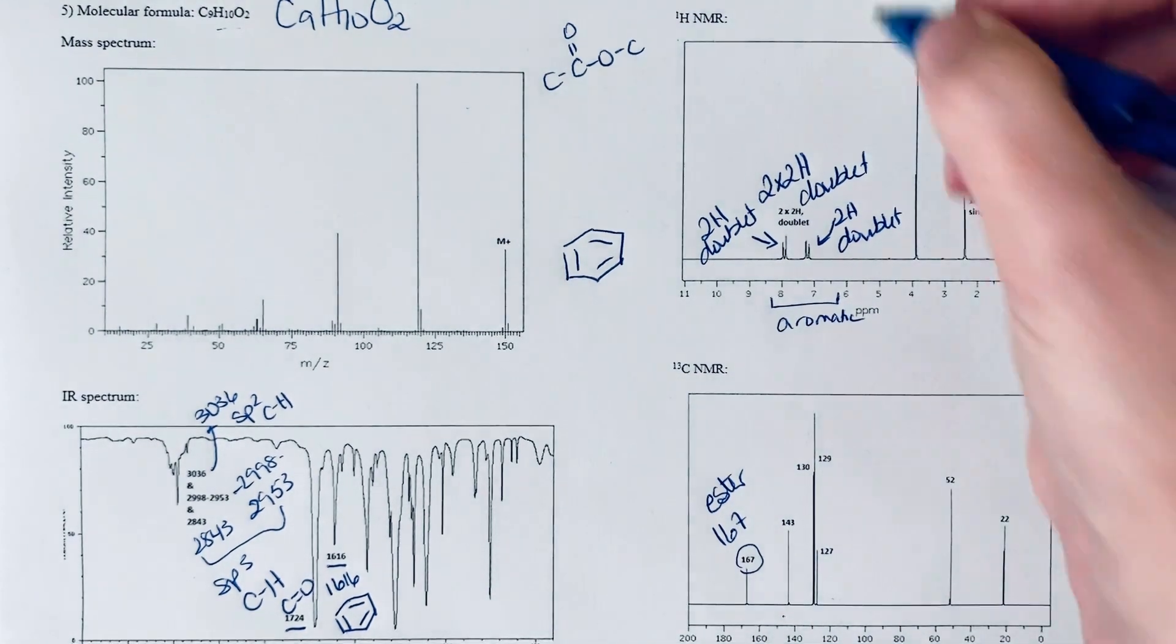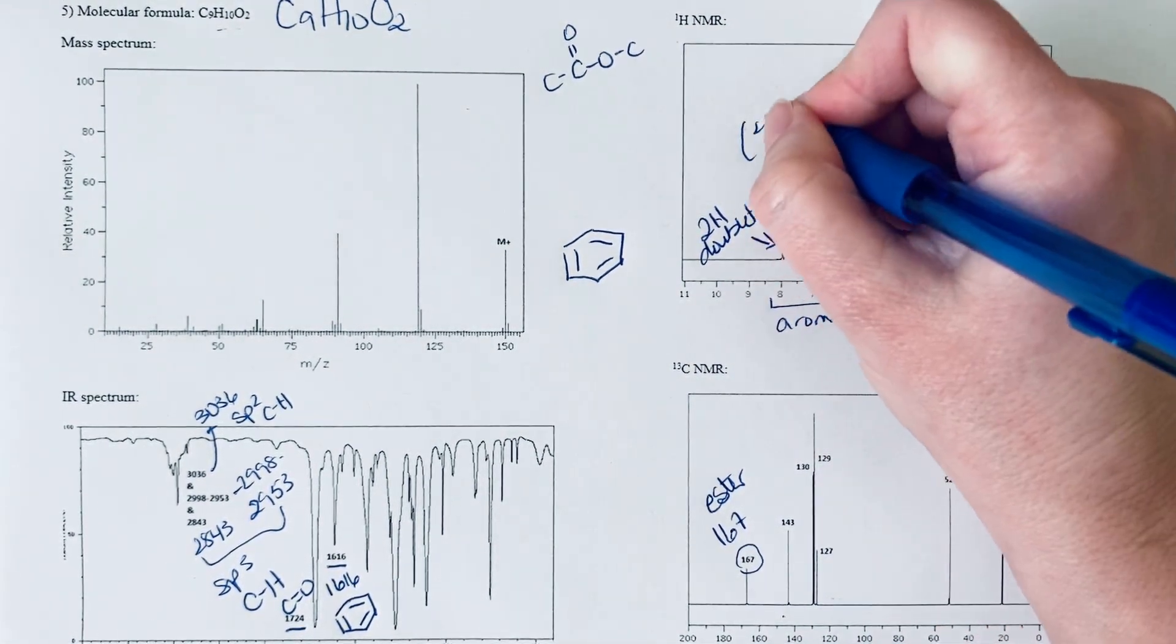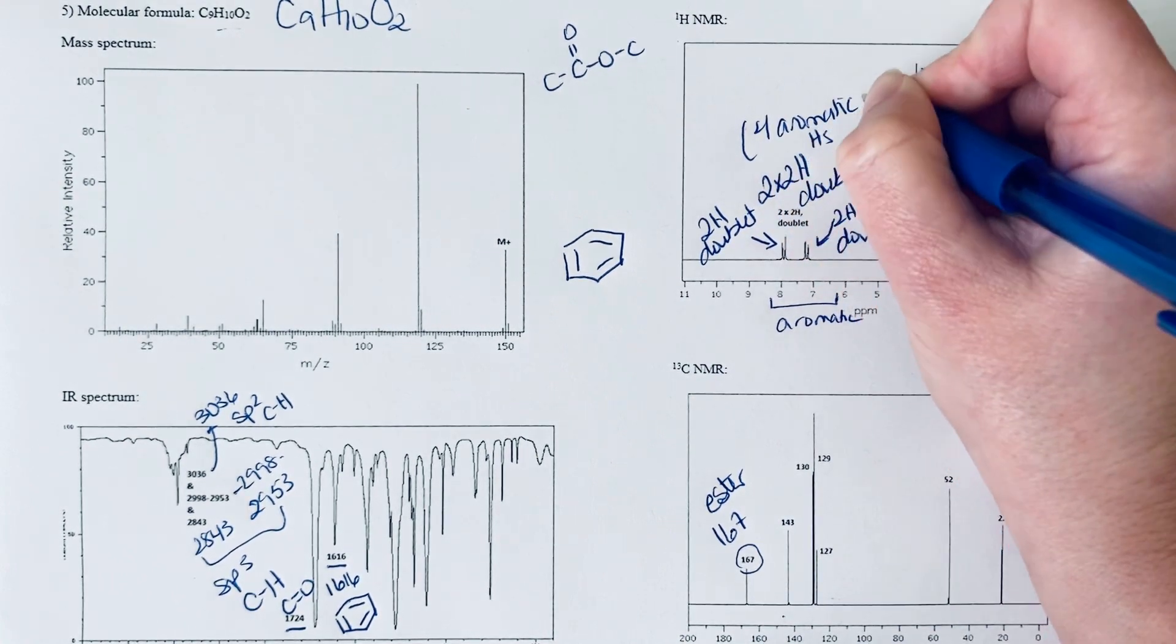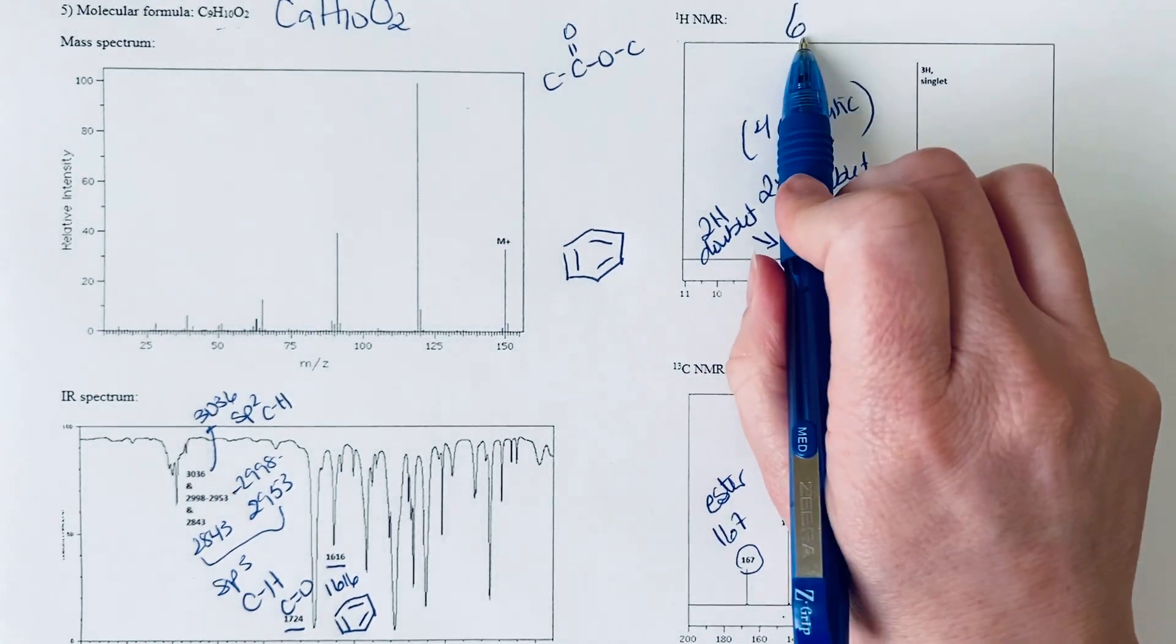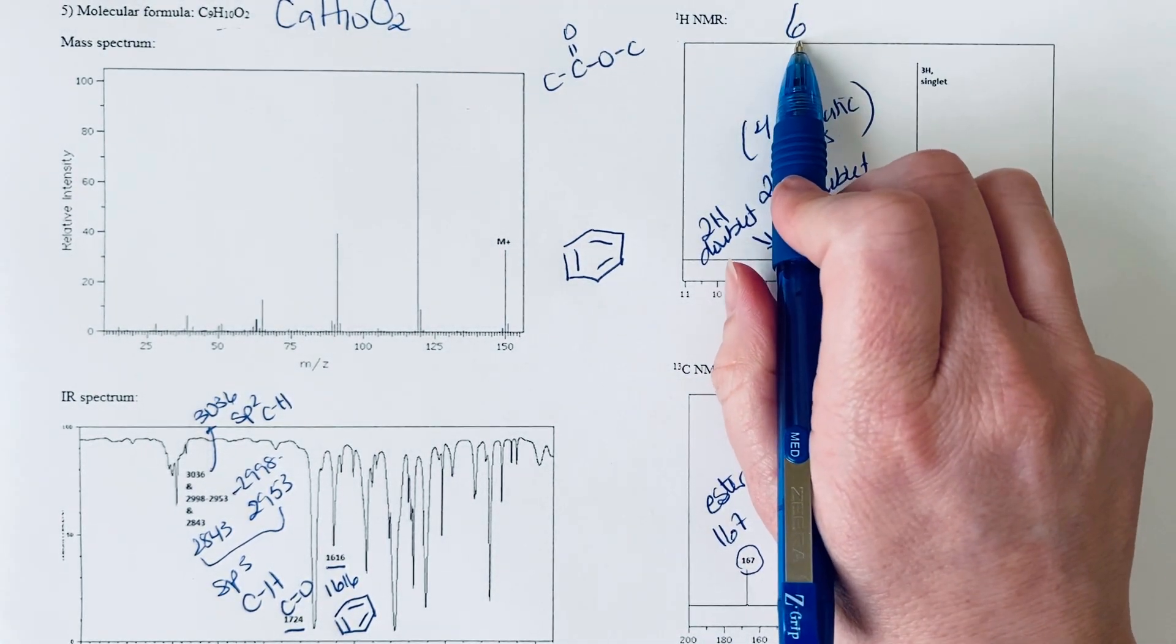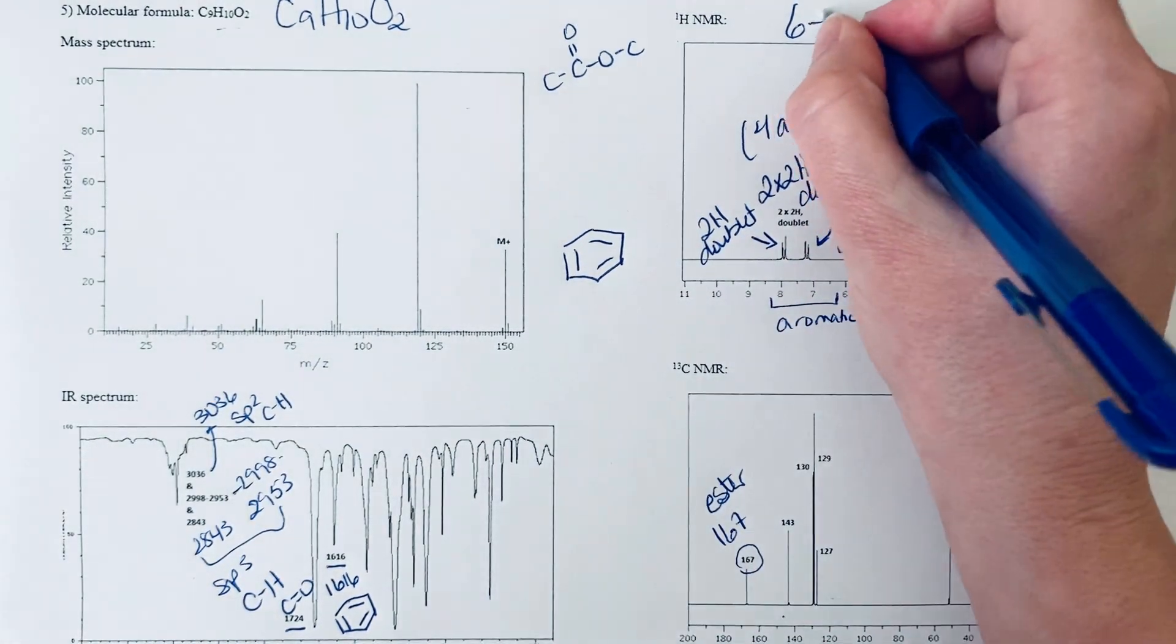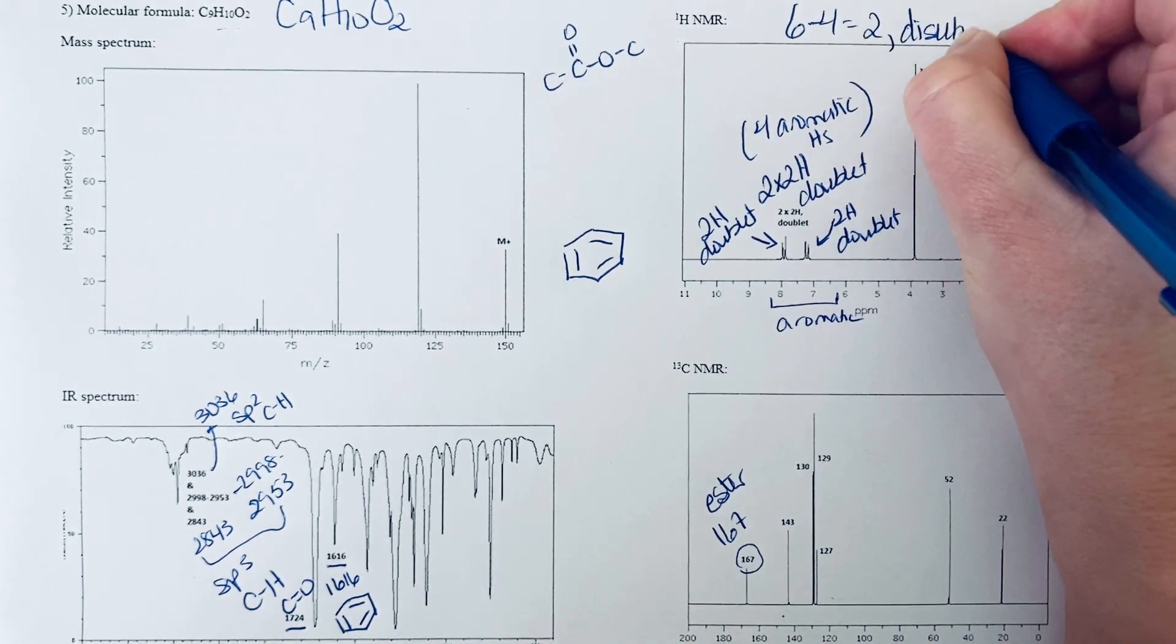We want to take a look at the substitution of the benzene ring. This means overall we have four aromatic hydrogens. If we do our quick math to see how it's substituted, we know unsubstituted benzene has six hydrogens, and every time you put a substituent on a benzene ring you remove one hydrogen. So six minus four is two—we have a disubstituted benzene ring.